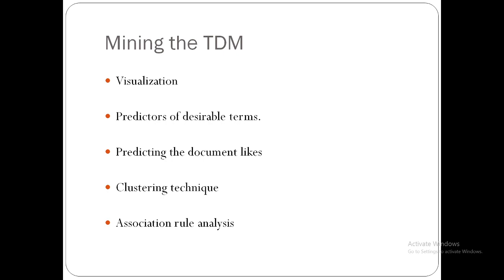Association rule analysis could show relationships of coexistence — for example, the words 'tasty' and 'sweet' occur together often, and further, when these two words are present, 70% of the time the word 'happy' is also present in the document.